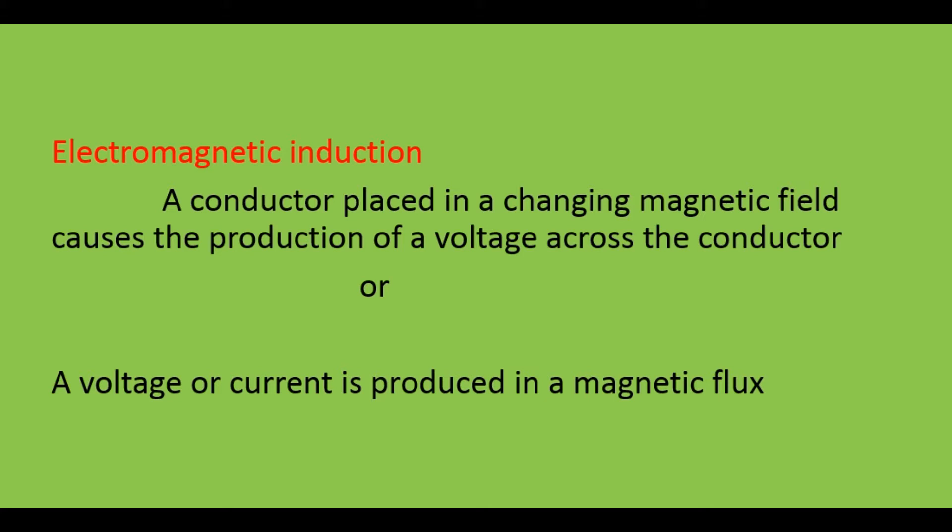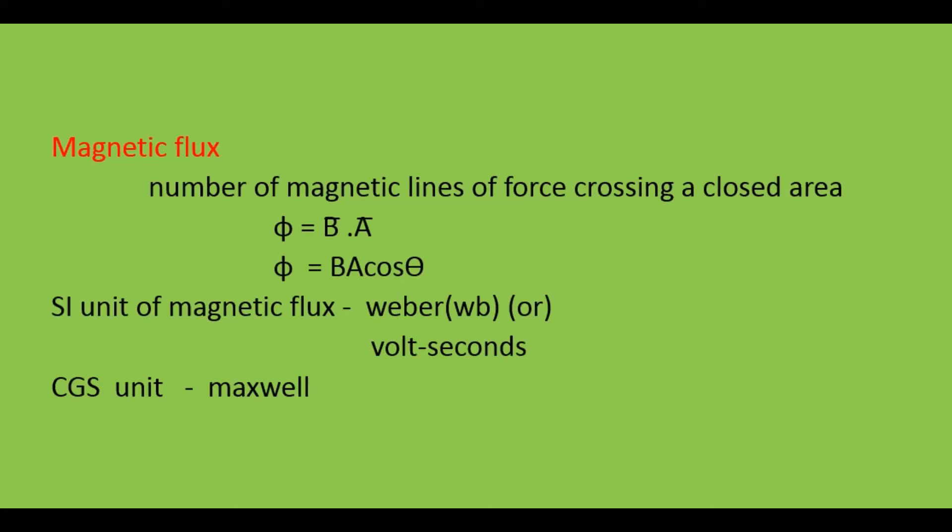We can simply say that a voltage or current is produced by a change in magnetic flux. Here one new term is magnetic flux. So what is magnetic flux? In general, flux is the amount of something passing through a surface. Magnetic flux means the number of magnetic lines of force passing through a closed area — that is called magnetic flux.